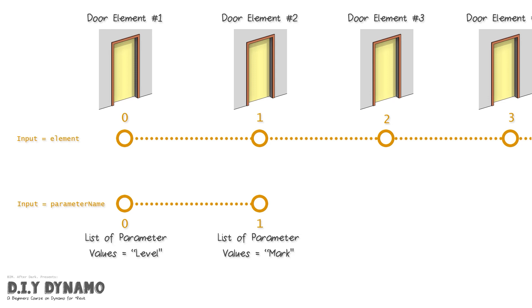And so when we're talking about lacing and using what's set as the default, which is shortest, what's happening is Dynamo is taking door element number one and door element number two, and it's doing the shortest possible combination. So that means that what you're getting, as you can see in the resulting list on the right hand side, is going to be level. The first item in our list is going to be the level for door number one, whereas the second item in the list is going to be the mark for door number two. And then we're not getting any information for door number three, four, five, six, et cetera.